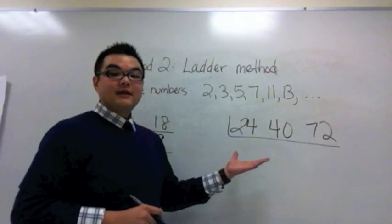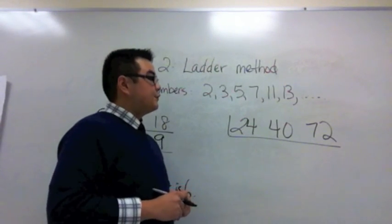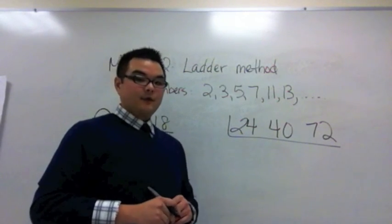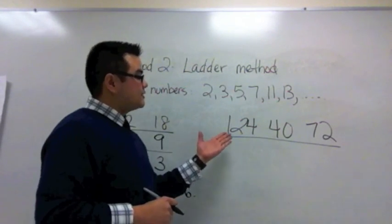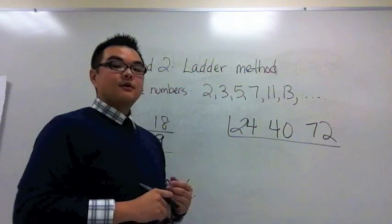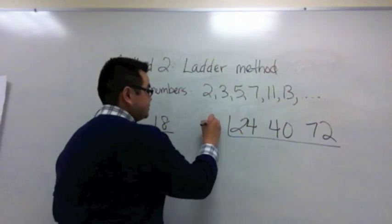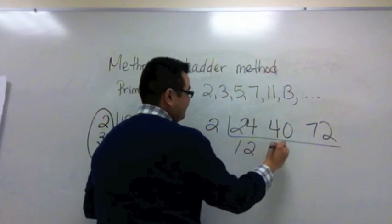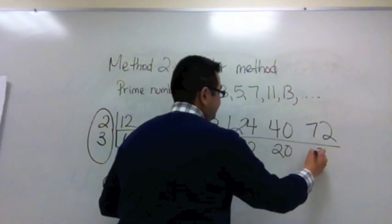Let's move on to a ladder method where you have to find the GCF of 24, 40, and 72. Three numbers. We use the ladder method the same way. We think of what prime number goes into all three of these. Since they're all even I know that 2 goes into each one. Following with the division the quotient for each one is 12, 20, and 36.